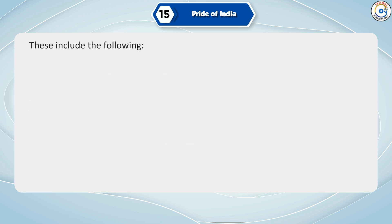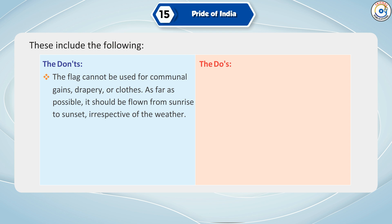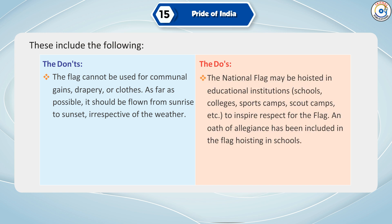The Don'ts: The flag cannot be used for communal gains, drapery or clothes. As far as possible, it should be flown from sunrise to sunset, irrespective of the weather. The Do's: The national flag may be hoisted in educational institutions, schools, colleges, sports camps, scout camps, etc., to inspire respect for the flag.